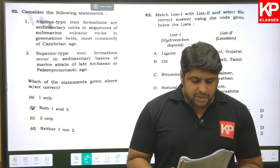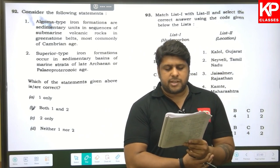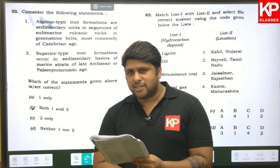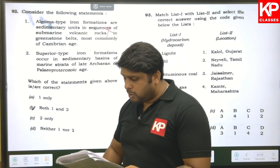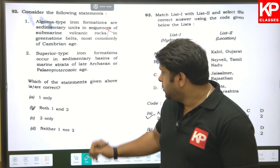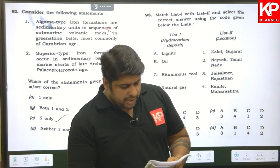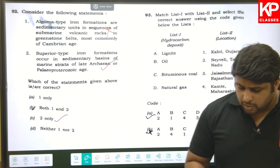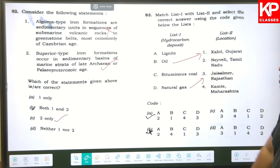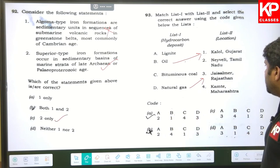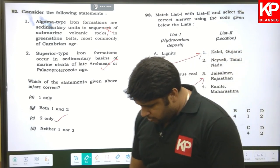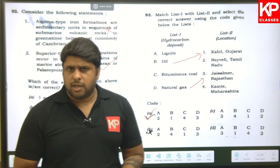Question ninety-three: Algoma-type iron formations are sedimentary units in sequences of submarine volcanic rocks in greenstone belts, mostly of Archean age — the statement says Cambrian age, which is wrong. Superior-type iron formations occur in sedimentary basins of late Archean and Proterozoic marine strata — this is correct. So only statement two is right, and C is the answer. Question ninety-four: match Indian oil/gas basins — oil from Gujarat, gas from Rajasthan (Jaisalmer), giving option A as the correct answer.